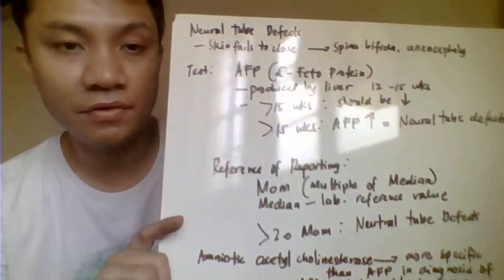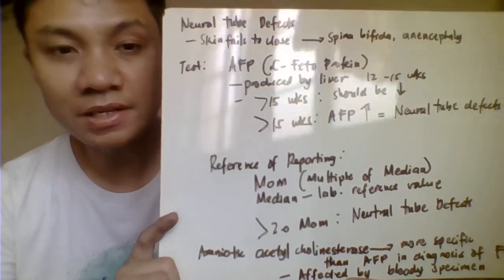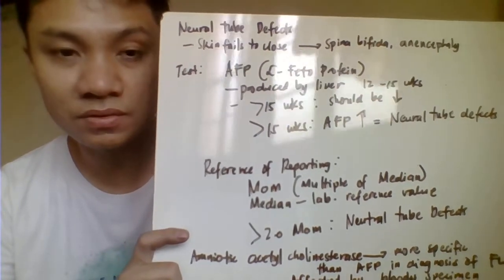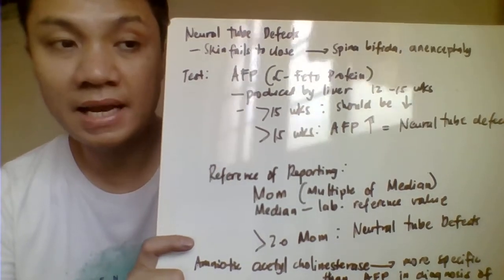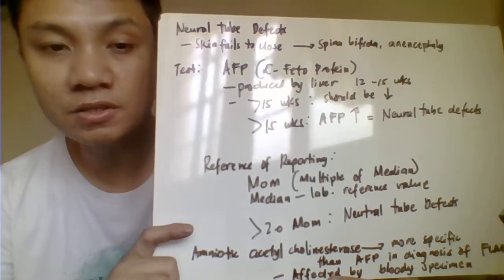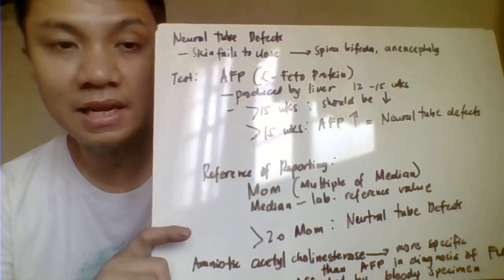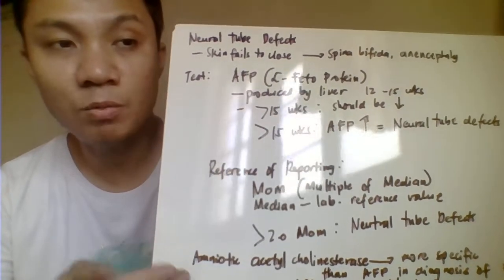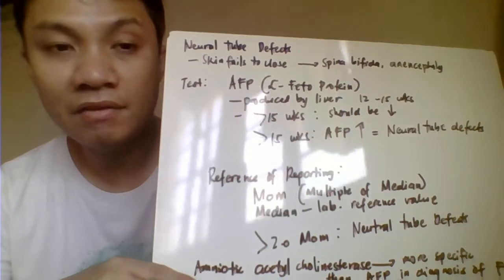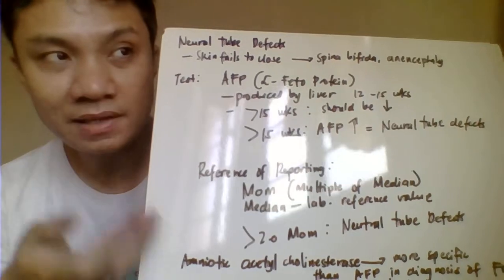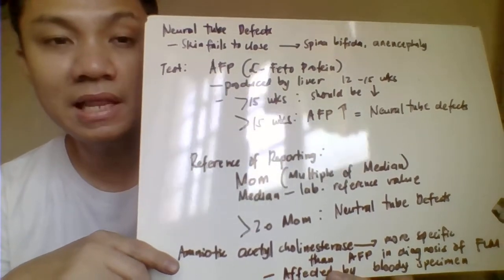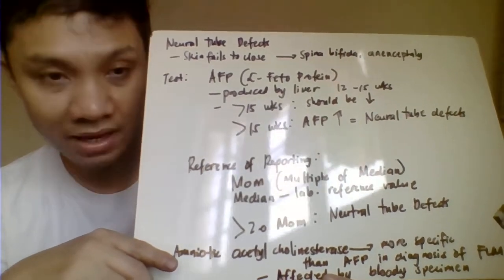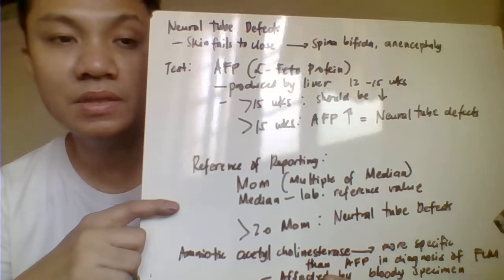Next we have the test for neural tube defects. Examples include spina bifida and anencephaly — conditions where the neural tube fails to close, resulting in high levels of alpha-fetoprotein. To test for neural tube defects, you test the level of alpha-fetoprotein. Alpha-fetoprotein is produced by the liver between 12 to 15 weeks age of gestation. After 15 weeks, the level should decrease. If it remains elevated after 15 weeks, it signifies a neural tube defect.